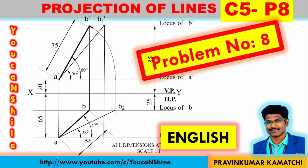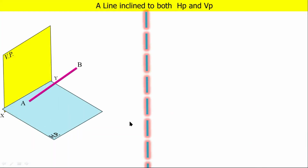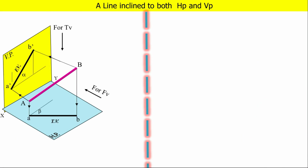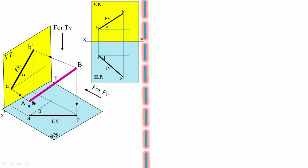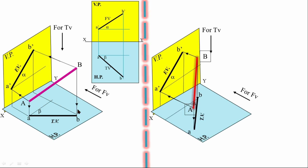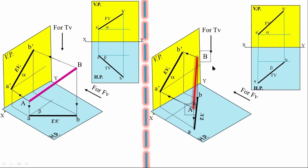Up to now, in the previous videos, we have solved problems where the locus position looks like this: nearer to XY we have the locus of A' and locus of A, and away from XY we have locus of B and locus of B'. Today we are going to solve a different case. I will explain this concept after reading the problem.